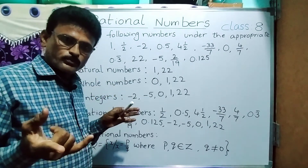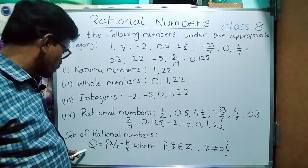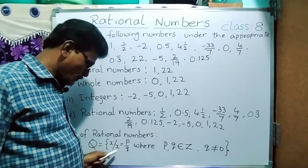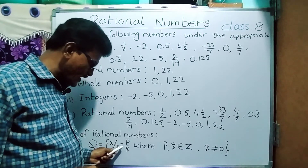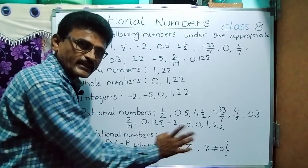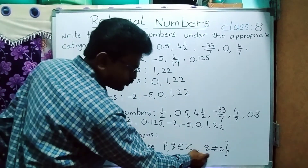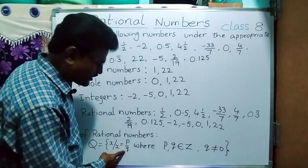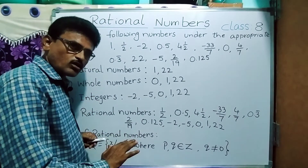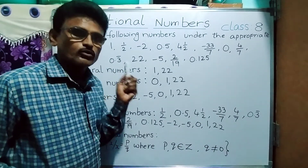To summarize: natural numbers are set N, whole numbers are set W, integers are set I or Z, and rational numbers are denoted by Q. Q is defined as the set of x such that x equals p by q, where p and q are integers (p, q belong to Z) and the condition is q not equal to 0. If you take q equal to 0, p by q is not defined, so never take q equal to 0. Today's introductory part is completed.